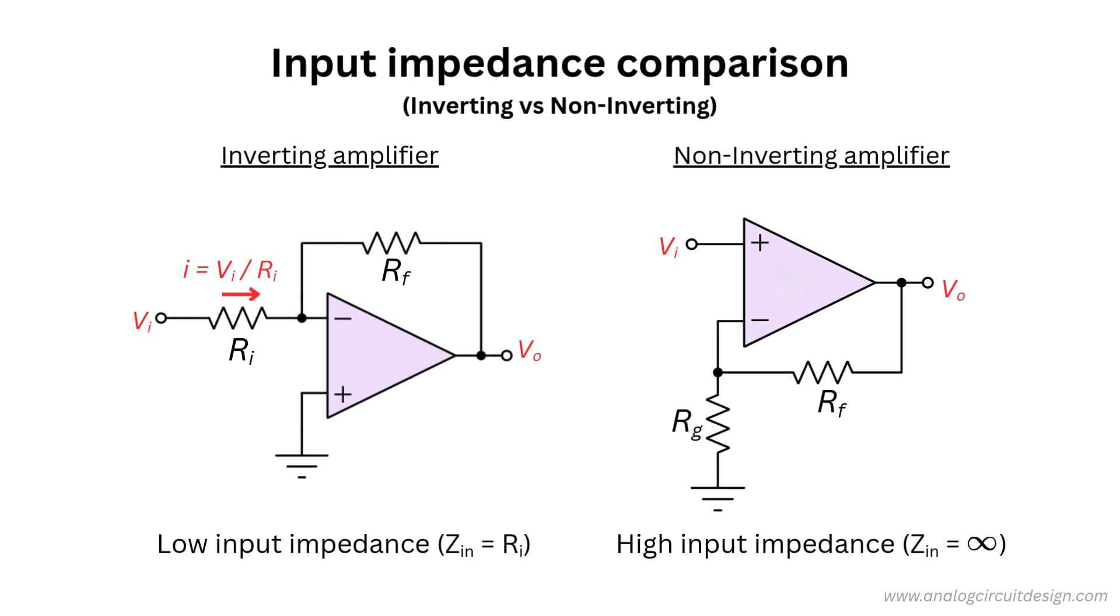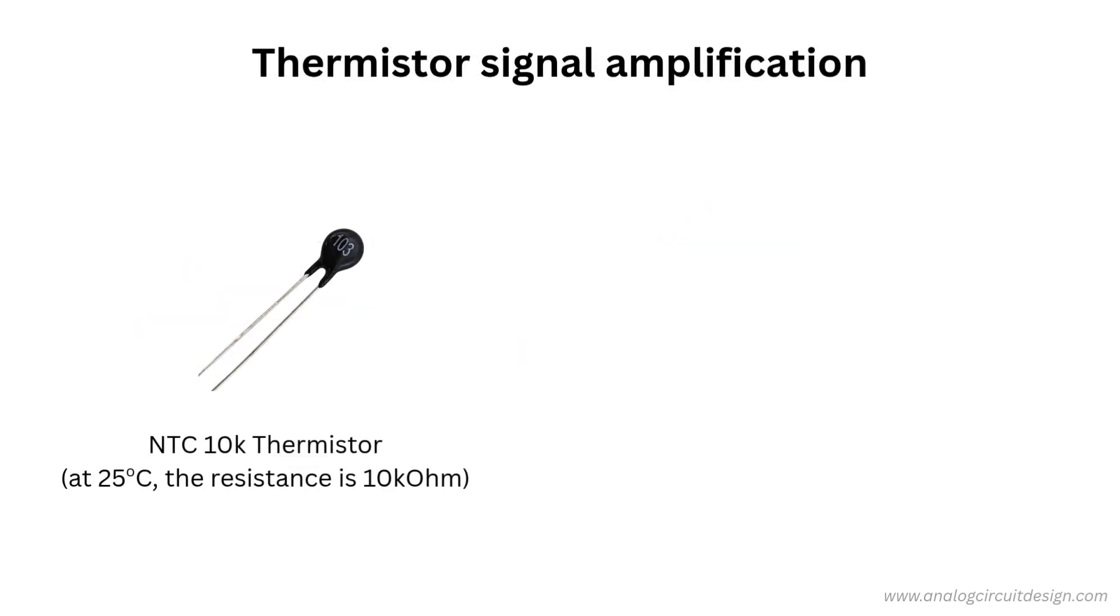Connecting the same sensor to VI in a non-inverting configuration draws nearly zero current, so the sensor's output voltage remains unaffected. To understand the impact of lower input impedance of inverting amplifier, let's walk through a simple example.